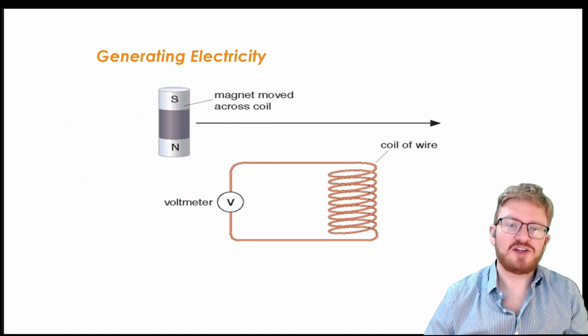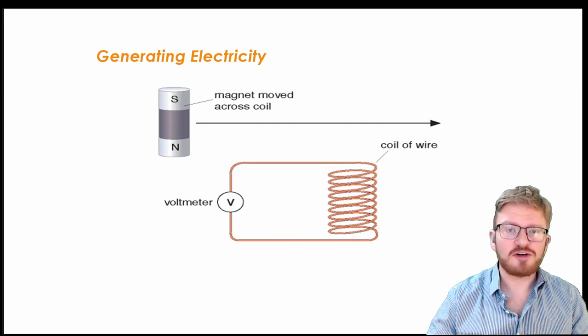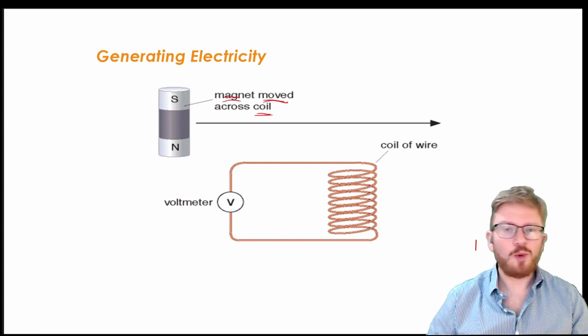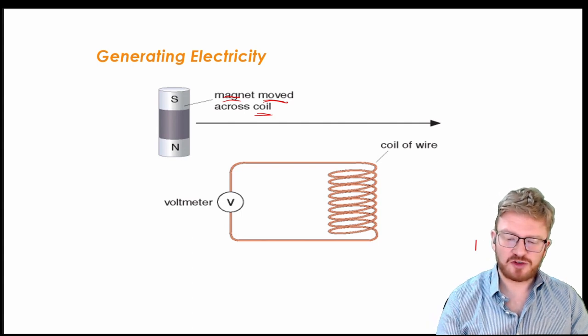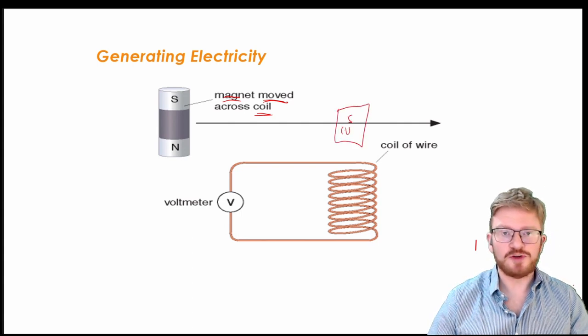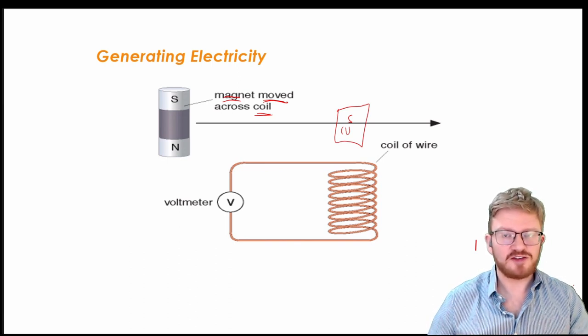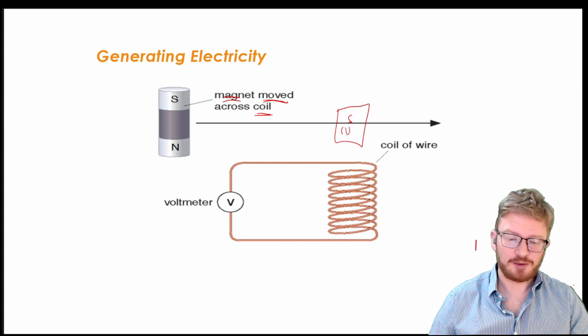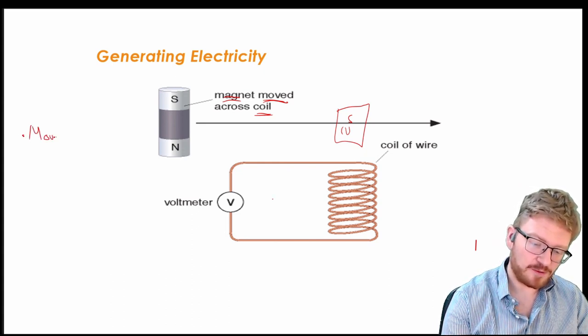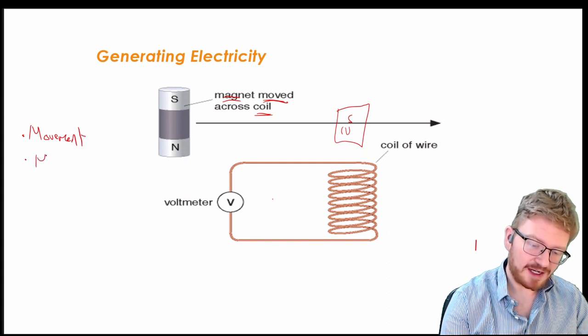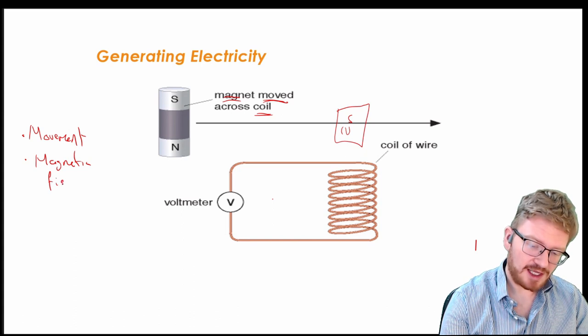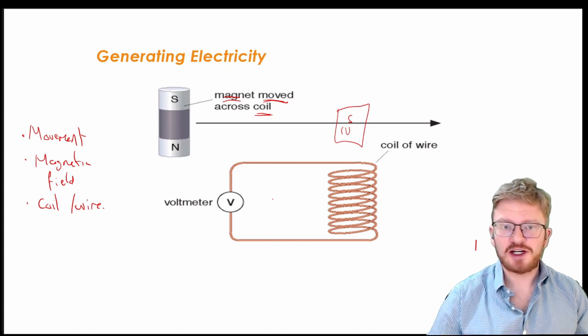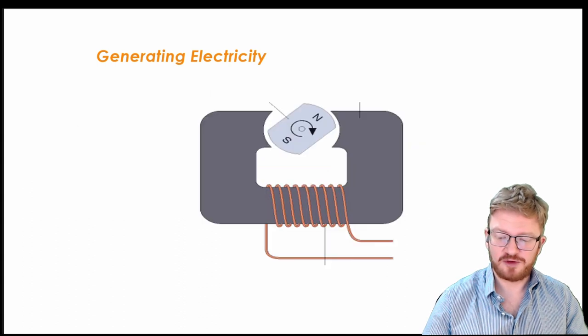So what you should remember from your IGCSEs or GCSEs is that in order to generate electricity, what we need to do is move a magnet near a wire. Hopefully you can remember that if I was to just hold a magnet here and not move it, I'm not going to get any voltage generated. Similarly, if I don't have a wire, or I don't have a magnet, I'm not going to get voltage either. So the three things I need are movement, a magnetic field, and I need a coil or a wire. If I have those three things, usually I can generate electricity. So what we're going to look at today is exactly how that works.